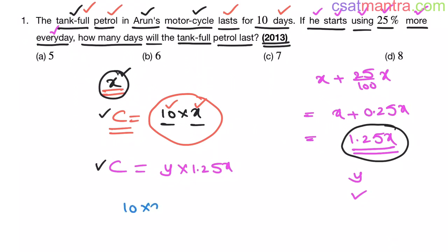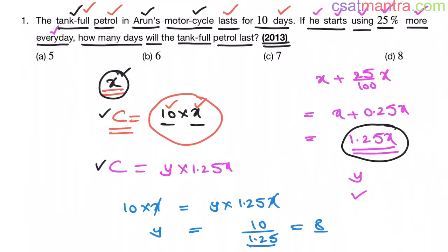10 into x is equal to y into 1.25x. x gets cancelled, so y is equal to 10 by 1.25, which is 8. Since 8 into 1.25 is 10, our answer is D — 8 days.